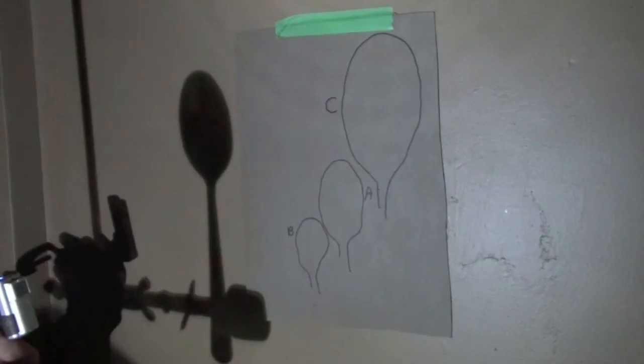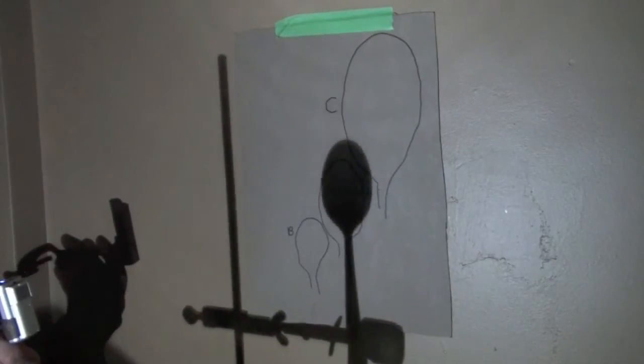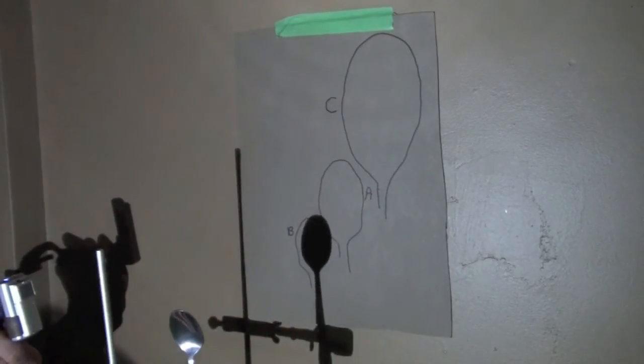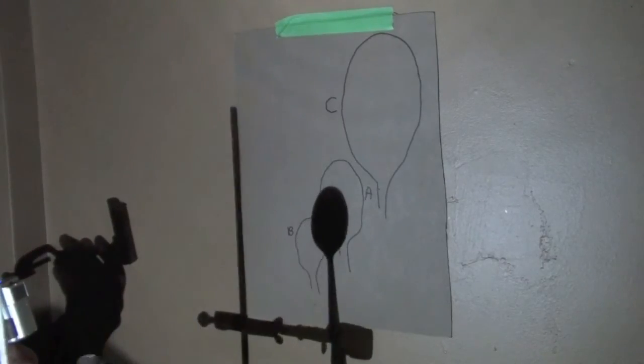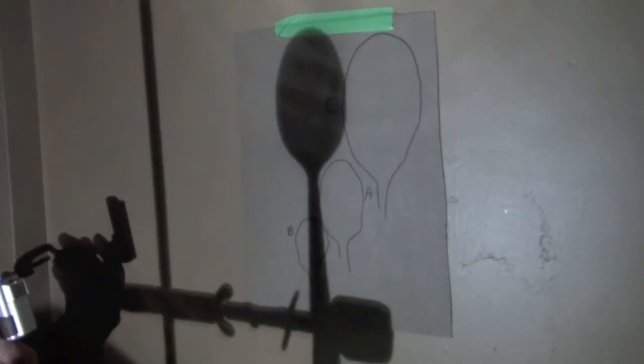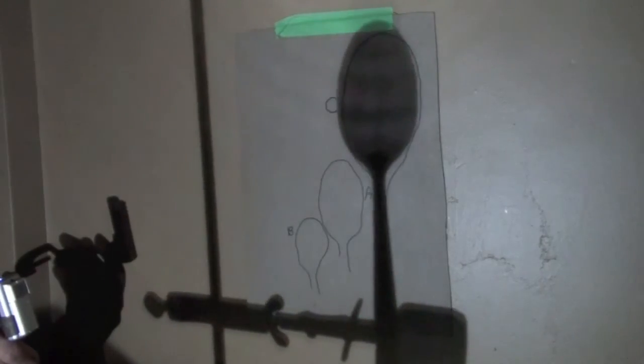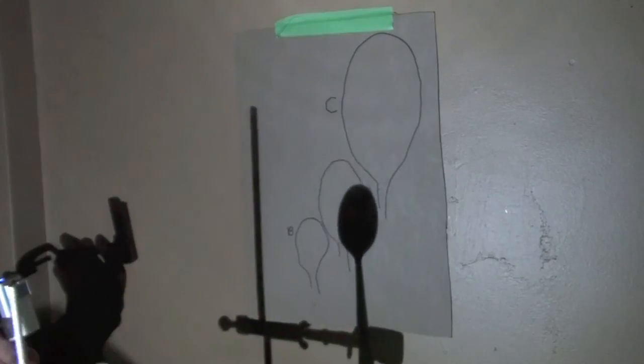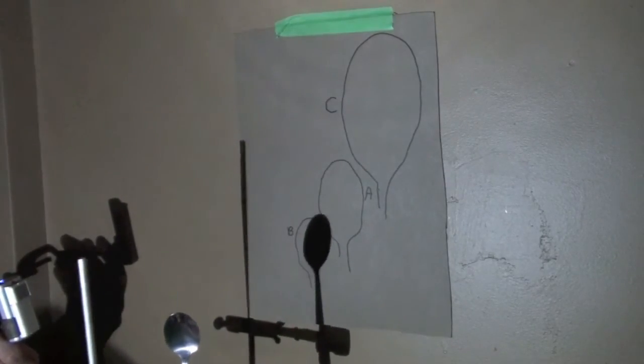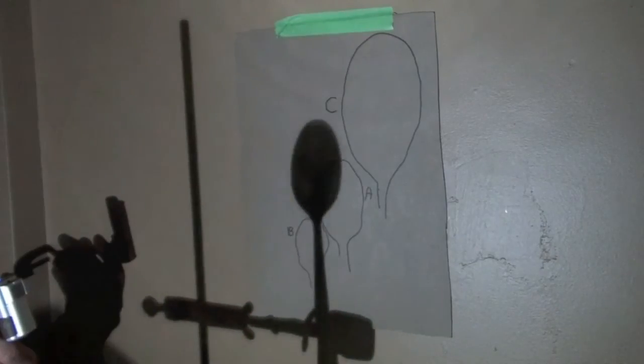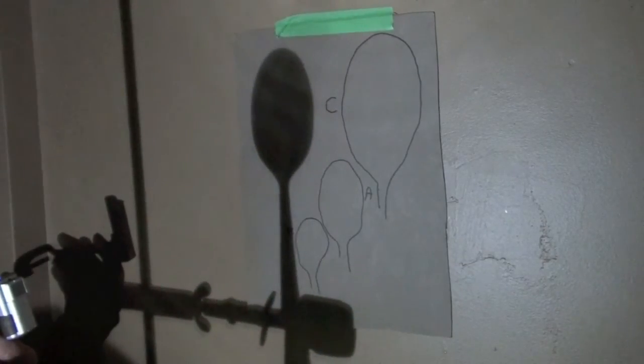And we can clearly see from the results that changing the distance of the object from the light source changes the size of the shadow. When you move the object closer to the light source, the shadow gets larger. And when you move the object farther away from the light source, the shadow becomes smaller. So by simply moving an object, you can change the size of its shadow.